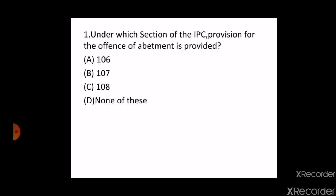The first question is: under which section of IPC is the provision for the offense of abatment provided? A. 106, B. 107, C. 108, D. None of these. The correct answer is B, that is 107. The offense of abatment is defined under section 107 of IPC under Chapter 5.